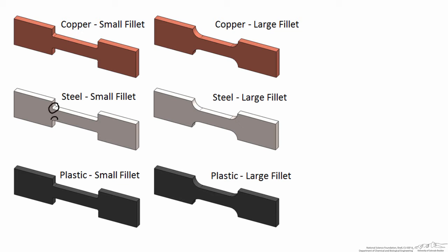These regions of the dog bones are known as fillets, and you've got a choice for either small fillets or large fillets. We're curious whether or not the material — copper, steel, or plastic — or the fillet radius makes a difference in the breaking strength of each of these samples. This means we have two different factors: the first factor is the material, and the second factor is the fillet radius.